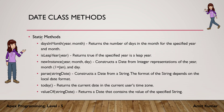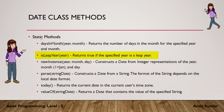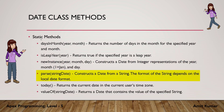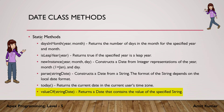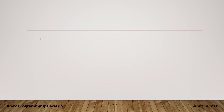Now let's talk about some static methods of Date class. The daysInMonth static method accepts two parameters — year and month — and returns the number of days in that specific month for the specified year. isLeapYear accepts a certain year and returns true or false depending on whether that year is a leap year. The parse method accepts a string and constructs a date from it; the format depends on your org's local date format. The today method returns the current date in the current user's time zone. The valueOf method accepts a string and returns a date containing the value of that string.